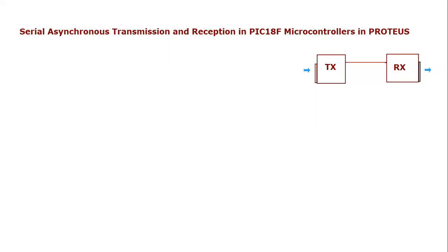Bismillahirrahmanirrahim. Today we are going to conduct another tutorial of PIC18F microcontroller and we will be performing serial asynchronous transmission and reception between two PIC18F microcontrollers. As you can see in this diagram, we have two microcontrollers — one used as transmitter and another as receiver. An 8-bit value will be inputted to the transmitter, which will send it serially to the receiver at a certain baud rate. The receiver will receive at the same rate and display the number on its output. Let's decide the transmission rate and write the code.